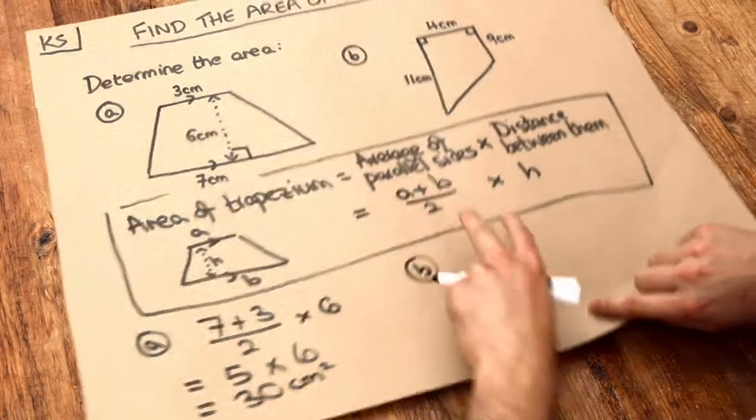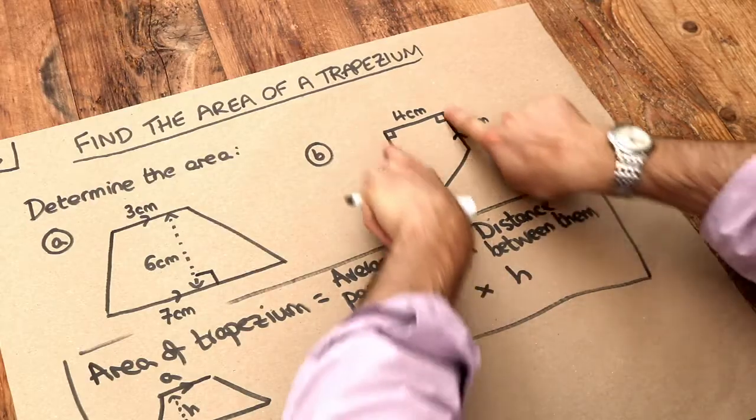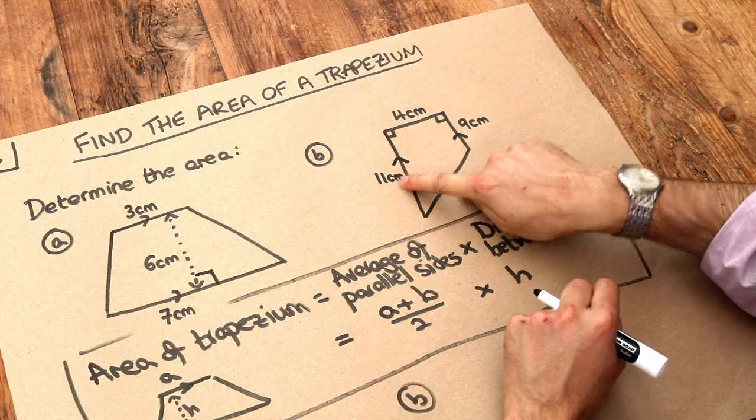And what about b? Let's first identify our parallel sides where we can see these sides are parallel in the same direction. What's the average of eleven and nine?